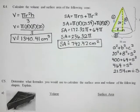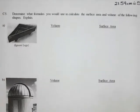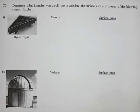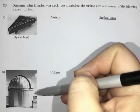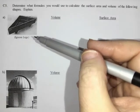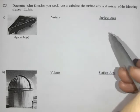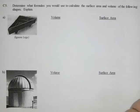Now question C5. C means communication. It says determine what formulas you would use to calculate the surface area and volume of the following shapes explained. We're going to try to isolate what formulas we think we would use if we're calculating the volume and then for the surface area and how we think we would change them.